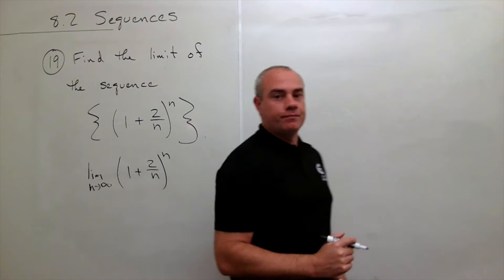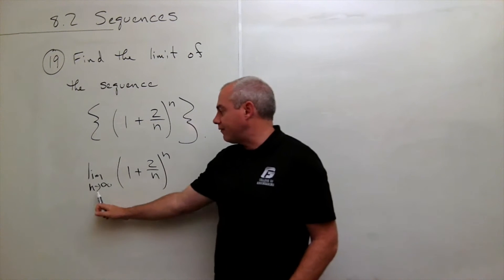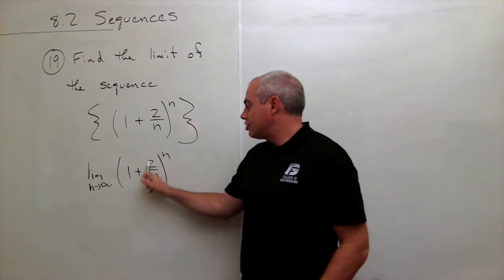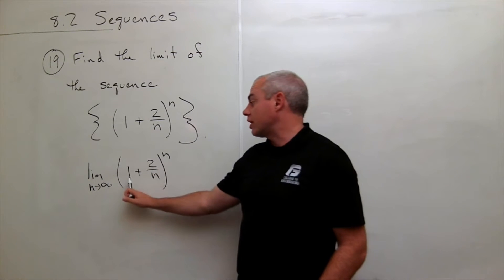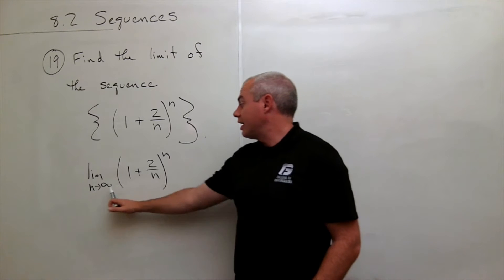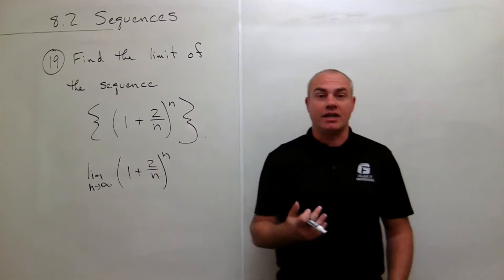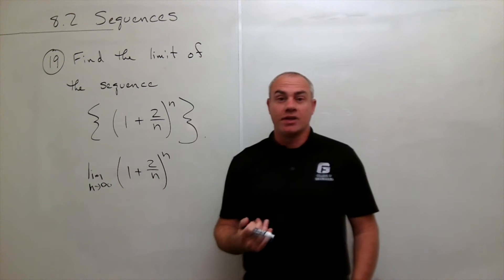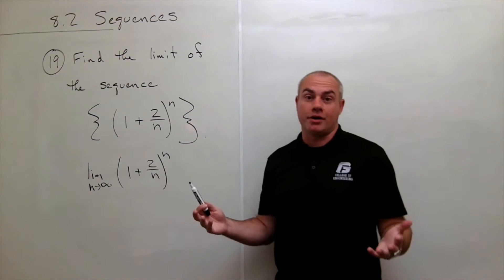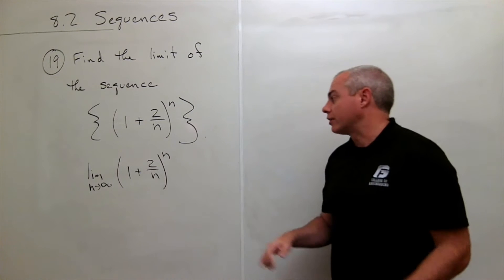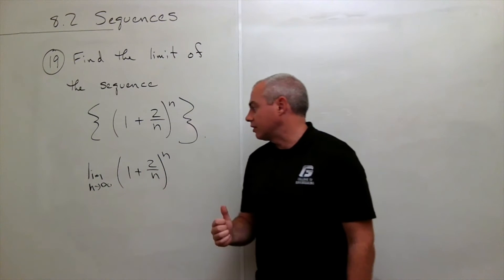What's the problem here? If I just plug in infinity as is, 2 over n goes to 0, so I get 1 plus 0, which is 1, and that's raised to the infinity. And 1 raised to the infinity is an indeterminate form, so we can't just say 1 to the infinity is 1. That doesn't work out, so we need to work with this a little bit more.